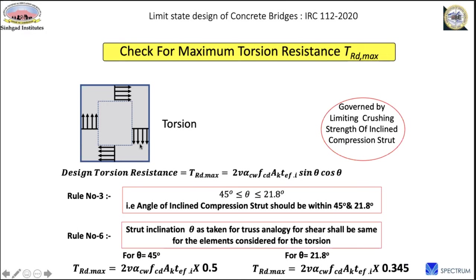For torsion design, you consider the member webs and add the shear force due to torsion to the regular shear force due to applied load, then carry out the same procedure using the variable angle theta for the combined shear and torsion. For a hollow section, the transverse shear reinforcement can be worked out for the combined torsion plus vertical shear. For a solid section, work out shear reinforcement separately for torsion and vertical shear and provide both. Torsion also requires additional longitudinal reinforcement due to the three-dimensional stress effect.